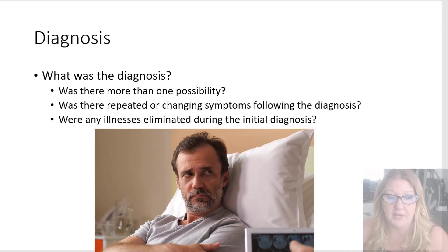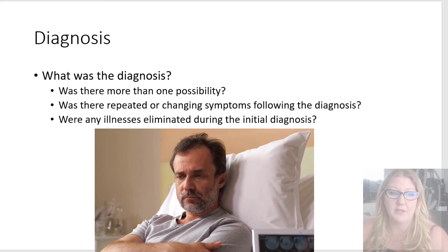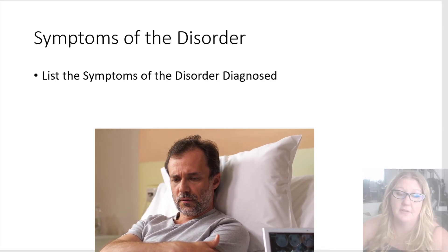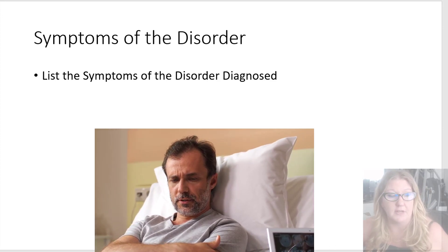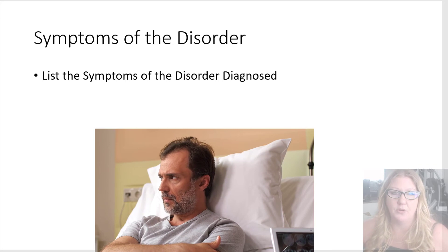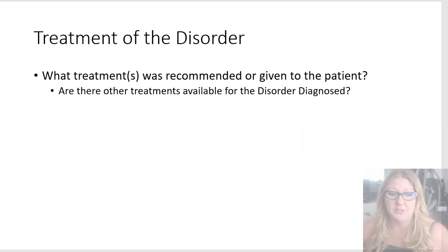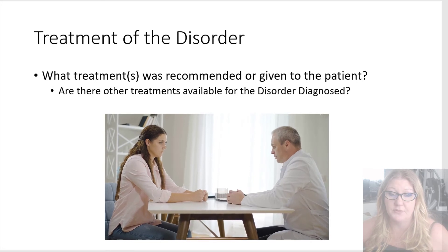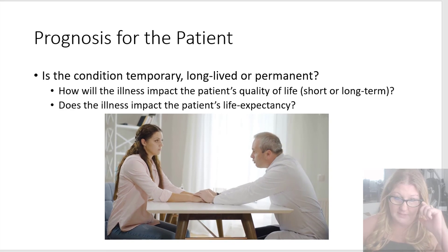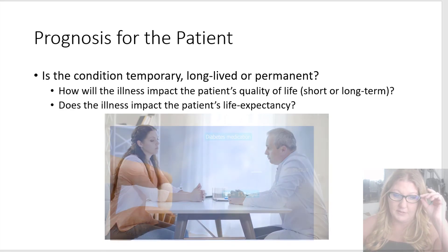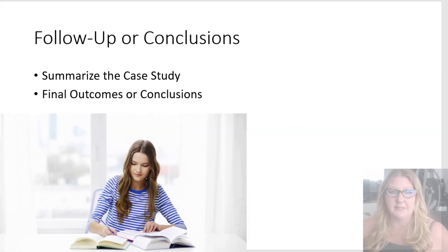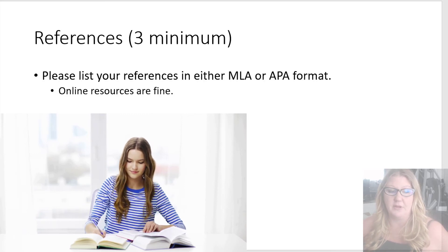For the diagnosis slide, describe what the diagnosis of the patient was — or if you're doing the broader approach, talk about how the diagnosis is made. List the symptoms of the disorder diagnosed and talk about the typical symptoms or hone in on your particular patient. Address the treatment and whether there are other treatments available. For the prognosis slide, discuss the long-term effects of receiving this diagnosis and what the treatment entails. Then your summary slide should summarize your case study, followed by a slide listing your three references.